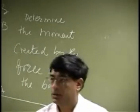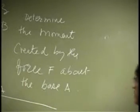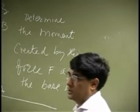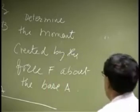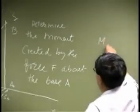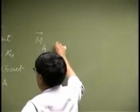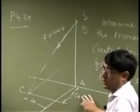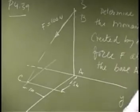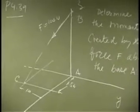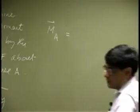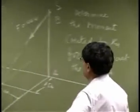So, that is what we have as the question, and it is done by two different methods. We are looking at the moment MA, the moment of this force about this point. To do this by two different methods, you need two different position vectors.